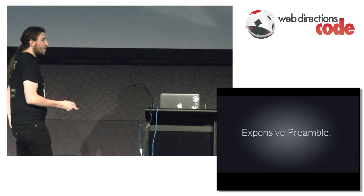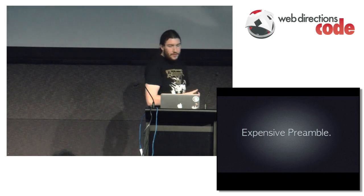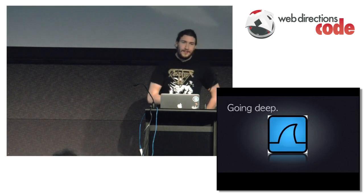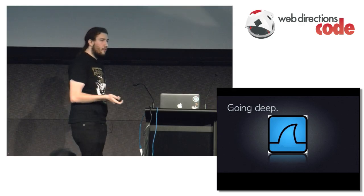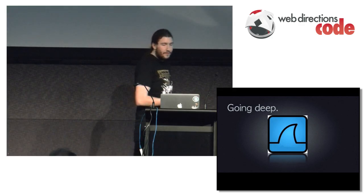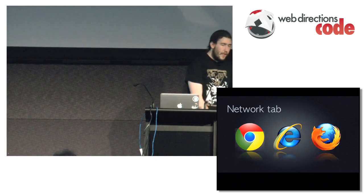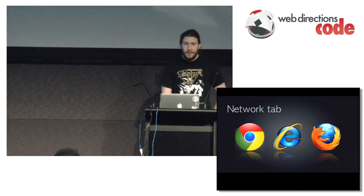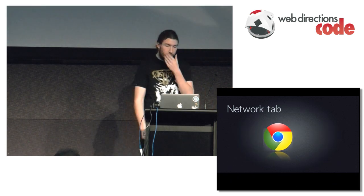There are two ways we could dig into what actually happens. One is a tool called Wireshark — it's confusing and has a horrible UI with lots of green and red colors everywhere. Or we could use the network tab inside our browser. Every browser ships with one — Firefox has Firebug, IE has a good one — but today we're going to focus on Chrome.